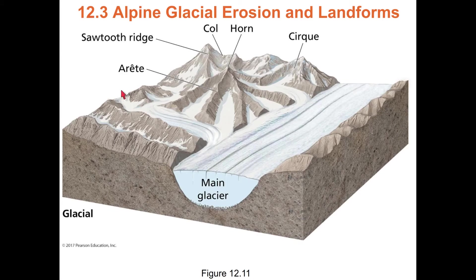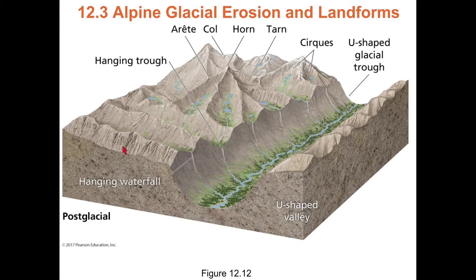Some erosional features: a narrow ridgeline is called an arête. A cirque is the bowl where the glacier forms. If two glaciers flow down parallel valleys, the ridge between them gets very steep and narrow — that's an arête. If glaciers radiate around a central peak, they can form a horn like the Matterhorn. After glaciers melt, you get U-shaped valleys. If tributary glaciers didn't erode down to the base level of the main valley, you get hanging valleys with hanging waterfalls — Yosemite has excellent examples. A string of lakes in a valley are called paternoster lakes. A low spot on a ridgeline is called a col or pass.